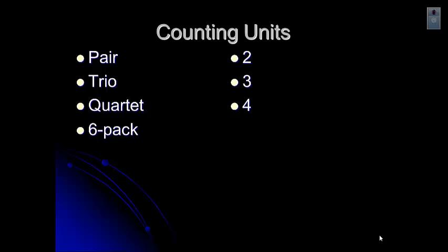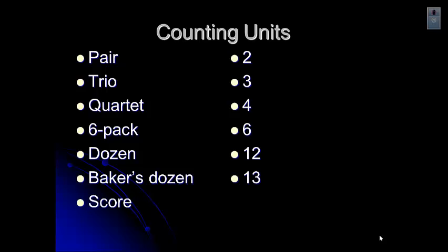Hopefully you remember that a pair is two, like a pair of shoes or a pair of mittens. A trio would be three. A quartet would usually be four. And then a six-pack of something like Diet Dr. Pepper would be six. A dozen is 12. When we buy eggs or donuts, we usually buy dozens. Sometimes you get a baker's dozen.